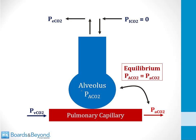To understand Bohr's equation, consider a working alveolus and a pulmonary capillary. Blood enters the capillary with CO2 concentration similar to venous blood — PVCO2. After traveling through the capillary it reaches the arteries, so the CO2 leaving equals the arterial CO2 concentration, PaCO2. As blood flows through a working alveolus, CO2 leaves and enters the alveolus, and by the time blood exits the capillary, equilibrium is established so that alveolar CO2 equals arterial CO2.